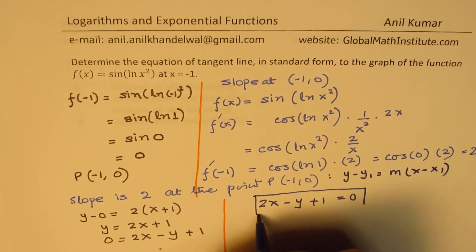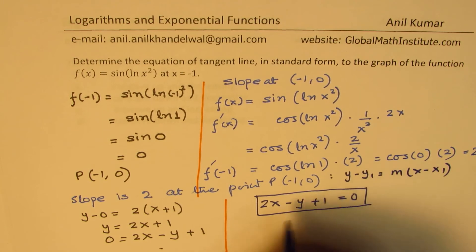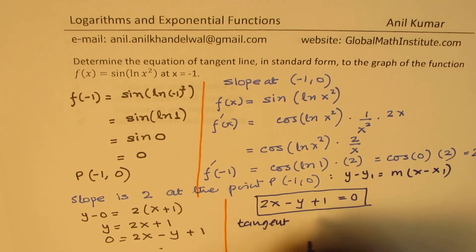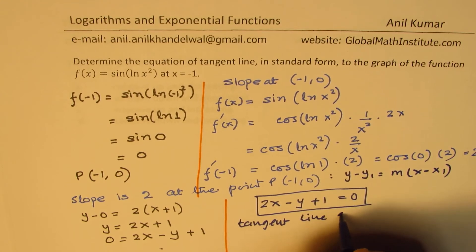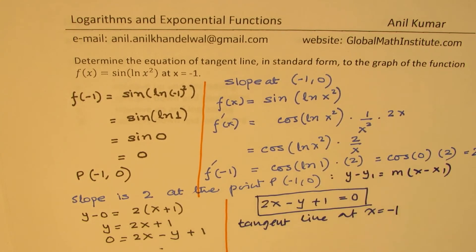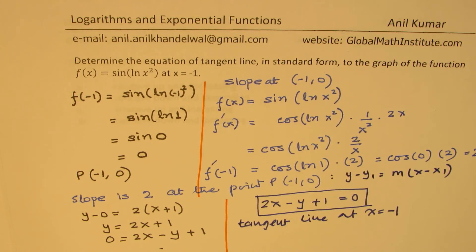That is the equation of the tangent line at x equals minus 1. I hope it makes sense. Feel free to write your comment, share your views, and if you like and subscribe to my videos, that would be great. Thanks for your time and all the best.